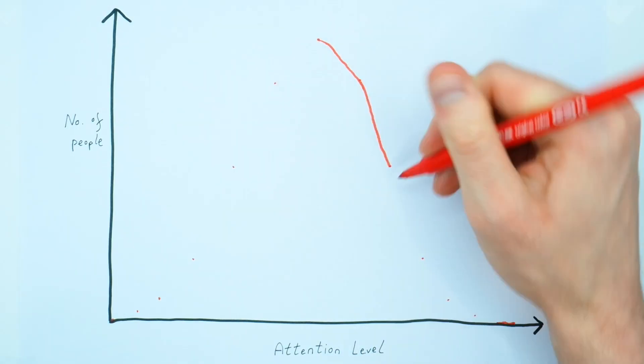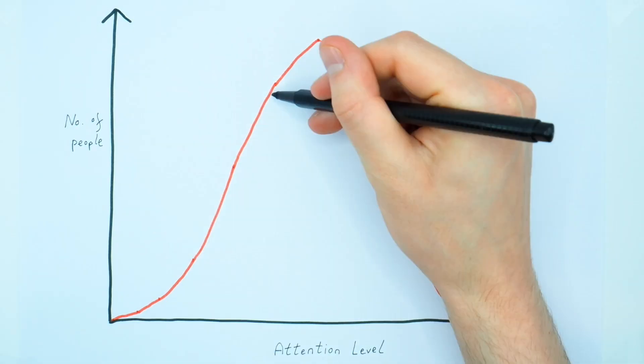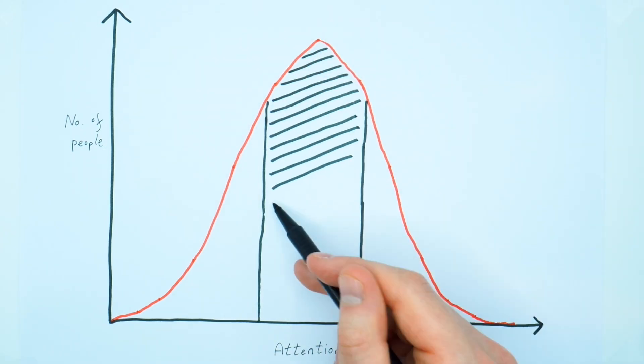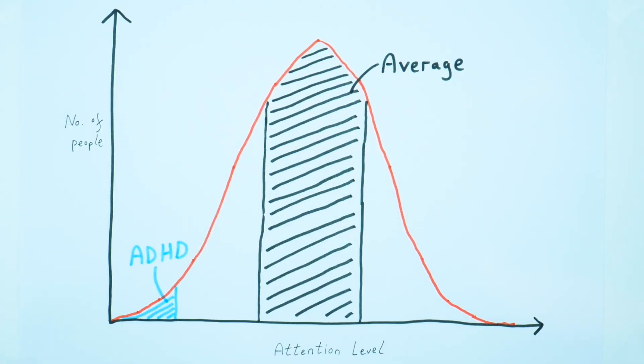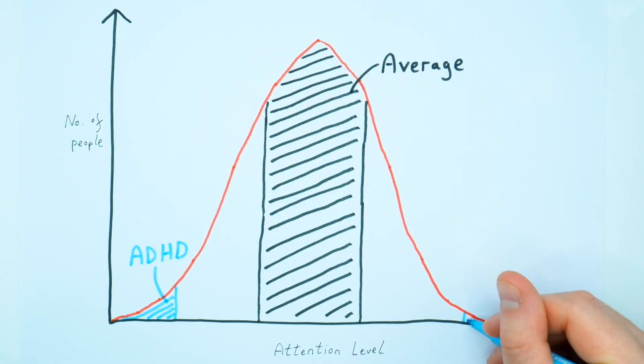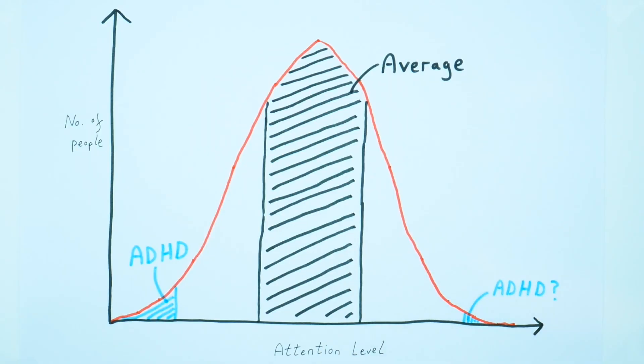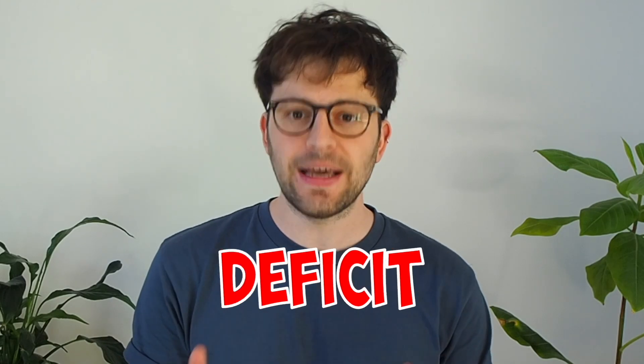Look at this graph. Attention is something we all have and it's a sliding scale with a normal bell curve distribution. This is where most people fall — average levels of distractibility, inattention and hyperactivity. ADHD mostly represents the extreme lower end of this bell curve. Confusingly, ADHD can also represent the upper end of this bell curve too, usually prolonged levels of attention for tasks that people find intrinsically interesting. If you've heard of attention deficit disorder, this term was absorbed into the broader category of ADHD about 30 years ago.